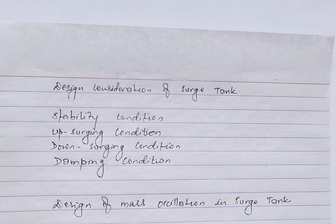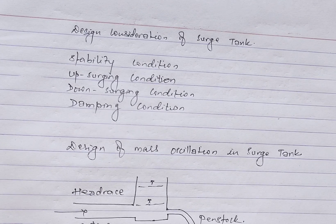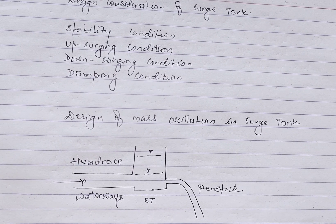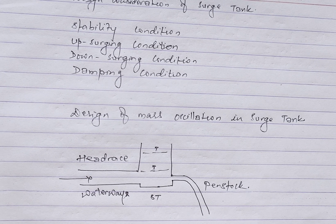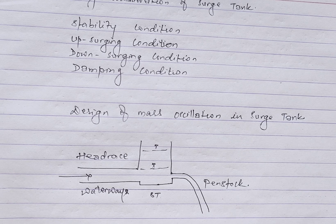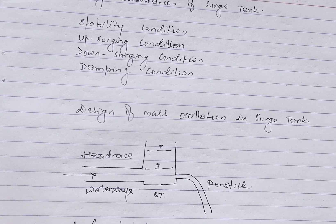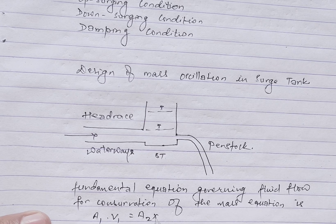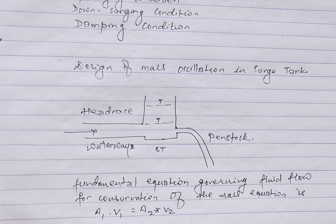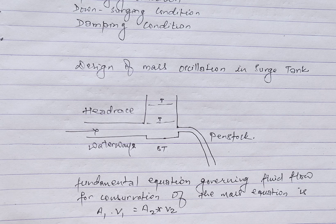Here we outline the basic principles and equations involved in source tank design, especially focusing on the momentum equation and water surface velocity. The fundamental equation governing fluid flow is the conservation of mass equation, expressed as A₁V₁ = A₂V₂, where A is the cross-sectional area of the pipe and V is the fluid velocity.